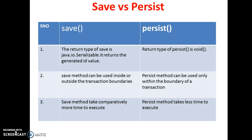The return type of save is java.io.Serializable — it returns the generated ID value, meaning it returns the primary key of the object. Coming to persist, the return type of persist is void; it does not return anything.